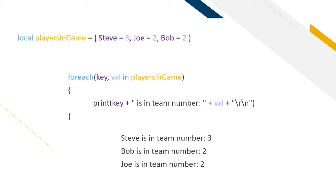Now we have a table called playersInGame. We reference it in the foreach loop, which assigns these two values the key and the value, and then we can reference that in the print command which will follow the output here.